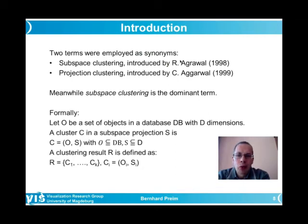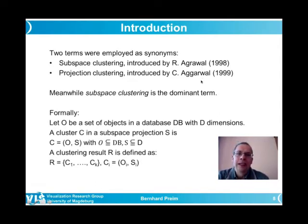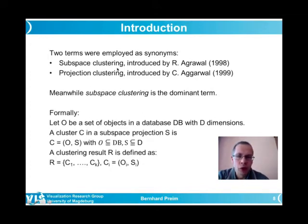The terms 'subspace clustering' and 'projection clustering' are used synonymously — interestingly, even the authors who introduced them have very similar names: Agrawal and Agrawal. The more frequent term today is subspace clustering. Formally, a cluster in a subspace projection c consists of a subset of objects O and a subset of dimensions S, where the result contains individual clusters c1 to ck, each being objects in a certain subspace.